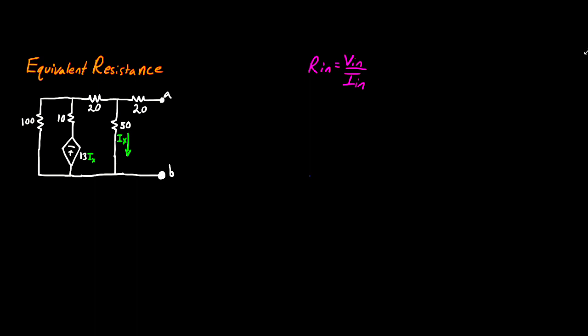However, when you have a dependent source in your circuit, things aren't so easy. The only way to find the equivalent resistance is to use the definition of resistance, which is that if you apply a voltage, you get a corresponding current, and the ratio between the two is resistance. Alternatively, you could apply a current and measure the voltage and use that to calculate the resistance as well. But in either case, the only way to find the equivalent resistance is to use circuit analysis.